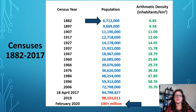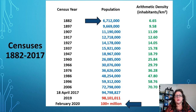Let's have a look at some census figures. In 1882, 6,712,000 people were recorded. This crept up in 1897 to 9,669,000. Over the years we can see a steady increase. The last census, taken on the 18th of April 2017, recorded 94,798,827 people. It's been estimated that in 2019 there were more than 98 million, and probably by 2020 more than 100 million.